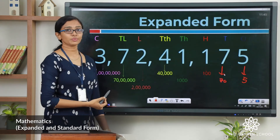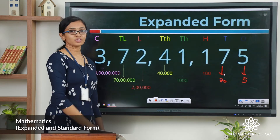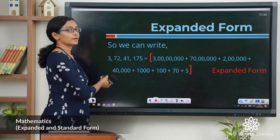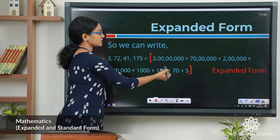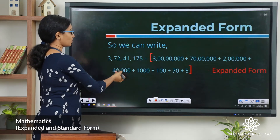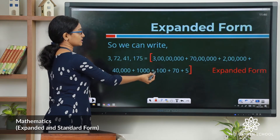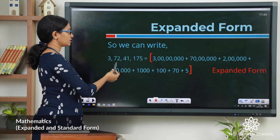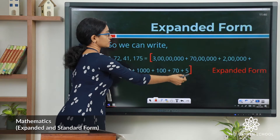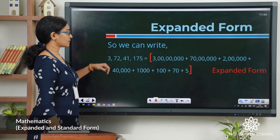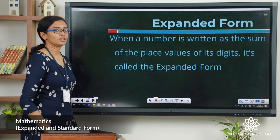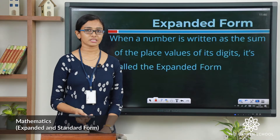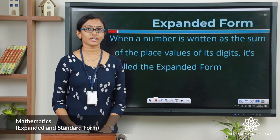So can we say this number is the sum of all these place values? We can write this number equals 3 crore plus 70 lakhs plus 2 lakhs plus 40,000 plus 1000 plus 100 plus 70 plus 5, which is the place value of each digit in this number. This part is called the expanded form of this given number. When a number is written as the sum of the place values of its digits, it is called the expanded form of the given number.